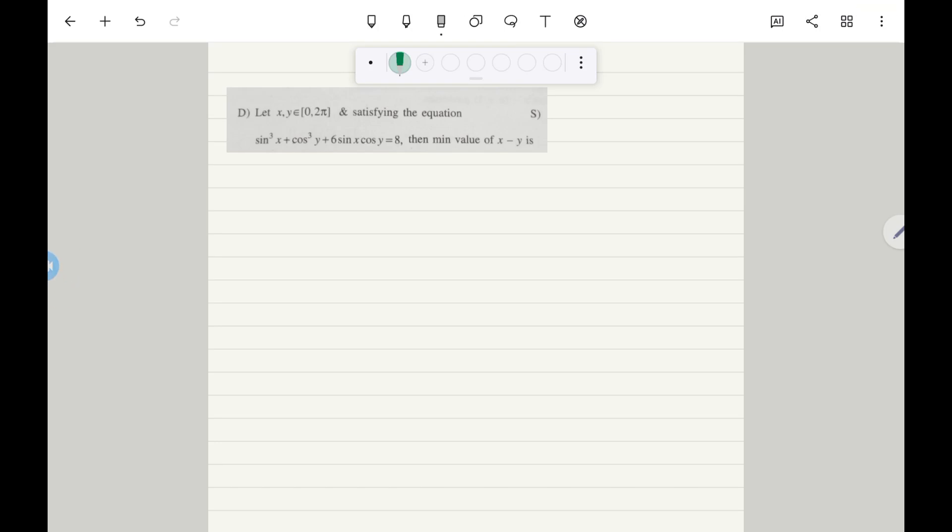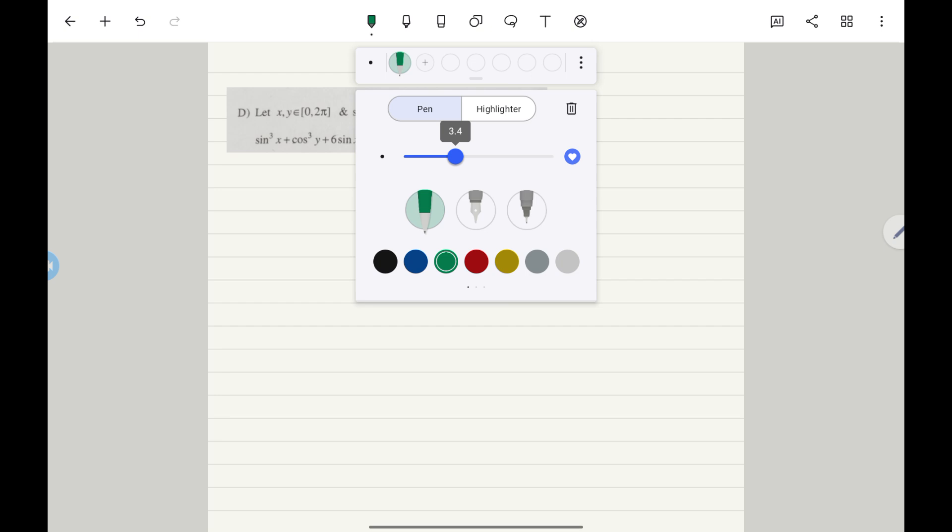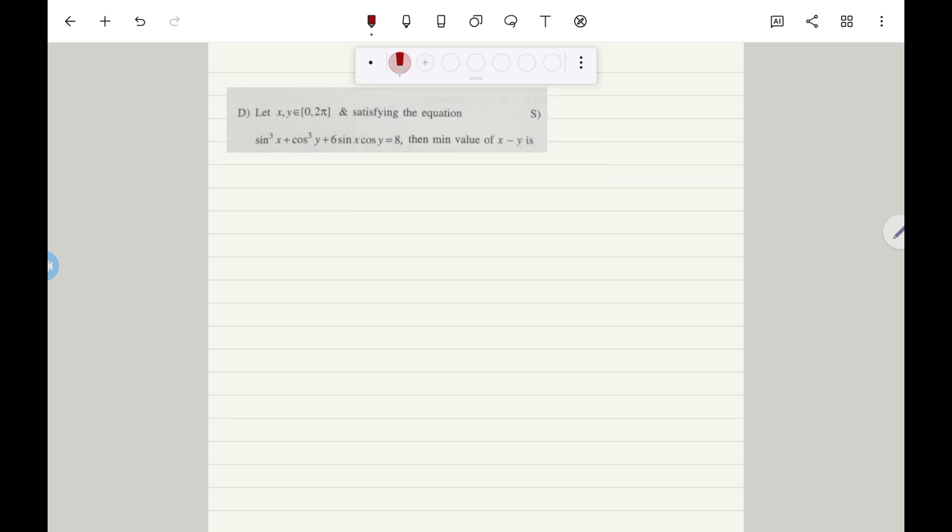Hello students, here I am going to explain one interesting problem. Let x, y belong to closed interval 0 to 2π and satisfy the equation sin³x + cos³y + 6sinx·cosy = 8. Then find the minimum value of x minus y.